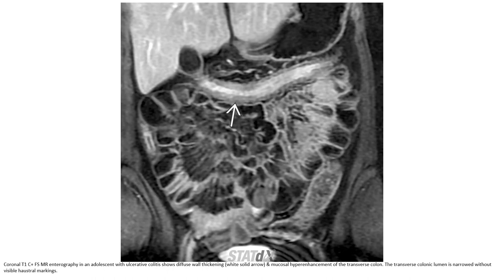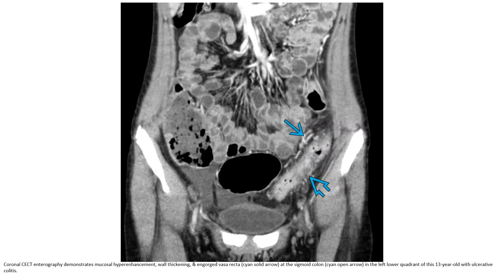T1C+ fat-saturated MRI enterography in an adolescent with ulcerative colitis shows diffuse wall thickening and mucosal hyperenhancement of the transverse colon. The transverse colonic lumen is narrow without visible haustral markings. Contrast CT enterography demonstrates mucosal hyperenhancement, wall thickening, and engorged vasa recta at the sigmoid colon in a 13-year-old with ulcerative colitis.